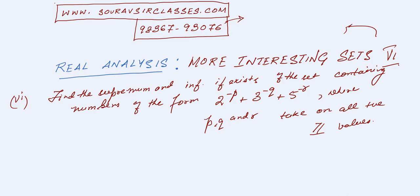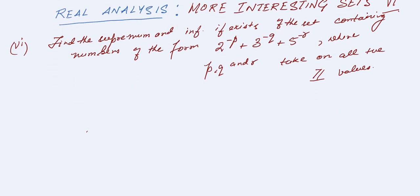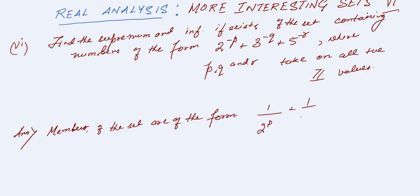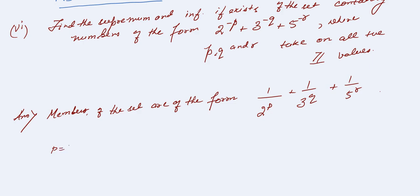Pretty interesting question. So let's visualize this first. The members of the set are of the form 1 by 2 to the power p plus 1 by 3 to the power q plus 1 by 5 to the power r. For p equals 1, q equals 1, and r equals 1, we have 1 by 2 plus 1 by 3 plus 1 by 5.